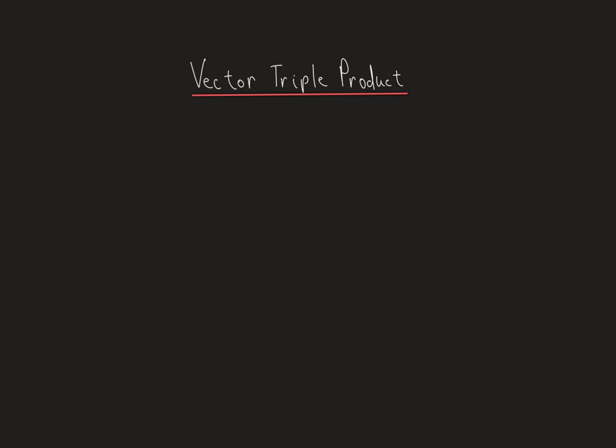The vector triple product concerns three vectors and the cross product between them. So let's say we have three vectors a, b, and c — the way I denote vectors is by underlining them, which is just a convention. We have the cross product between these three vectors.